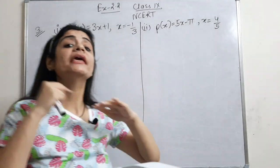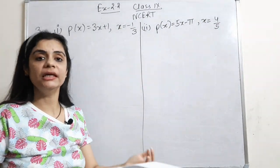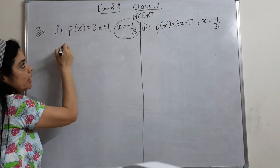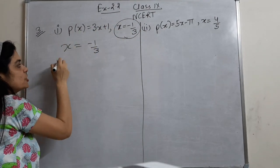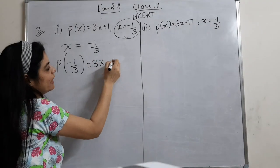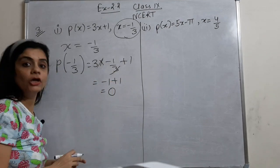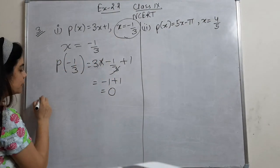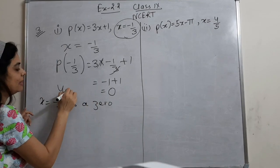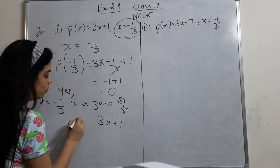To verify, I'll put x = -1/3 into the polynomial. Wherever x is, replace it with -1/3. So we get minus 1 plus 1, which is 0. That means x = -1/3 is a zero. Yes — write 'yes, this is a zero of 3x + 1.'